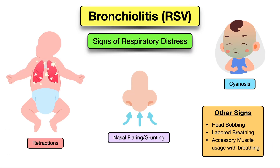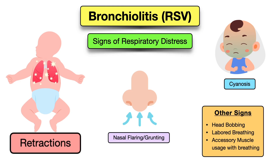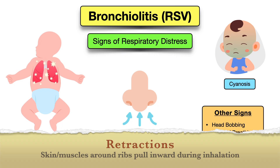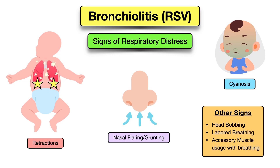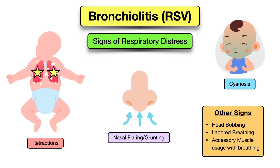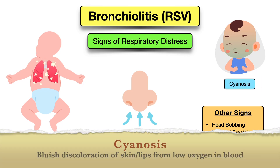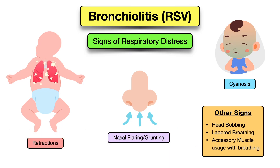There may also be signs of respiratory distress, especially in more severe cases. These include retractions — when the skin and muscles between or around the ribs pull inward during inhalation — which can be subcostal (below the ribcage), suprasternal (above the sternum), or intercostal (between the ribs). Other signs include nasal flaring, grunting, cyanosis (bluish discoloration from decreased blood oxygen), head bobbing, labored breathing, and accessory muscle usage.